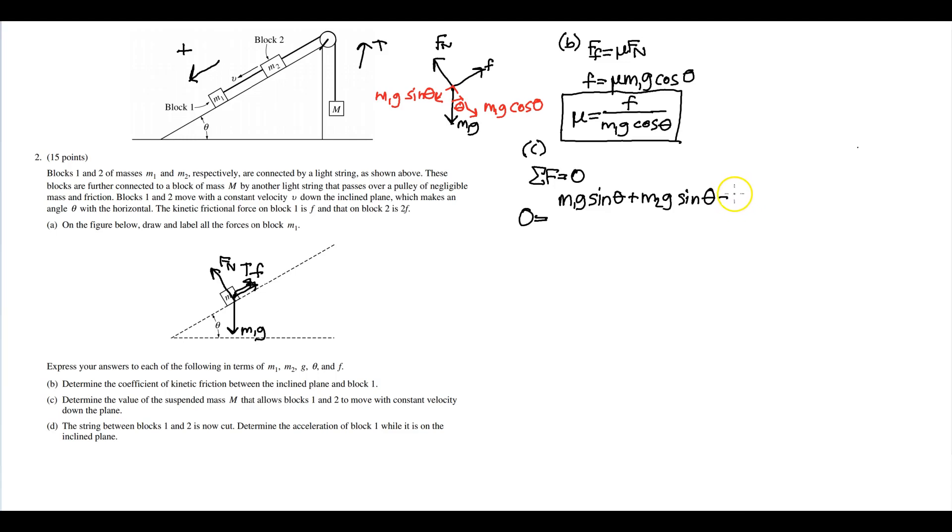The friction for block one is f, so we're subtracting two f, and then Mg—so gravity for our big M will also oppose the motion of the system. And all that will be divided by the total mass of the system: m1 plus m2 plus M.